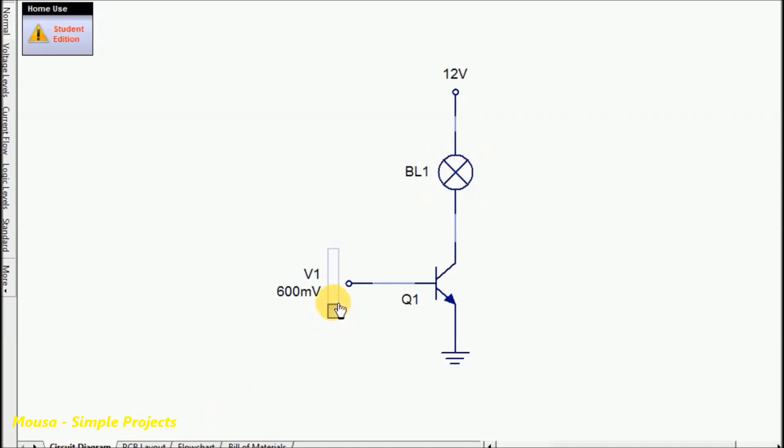But how much voltage do we need on the base to turn on the transistor? The voltage on the base should be at least 0.7 volts more than the voltage of the emitter. In this case, because the emitter is connected to ground which is zero volts, we need 0.7 volts on the base. But if the voltage on the emitter was, for example, 1 volt, we would need 1.7 volts on the base to turn on the transistor.